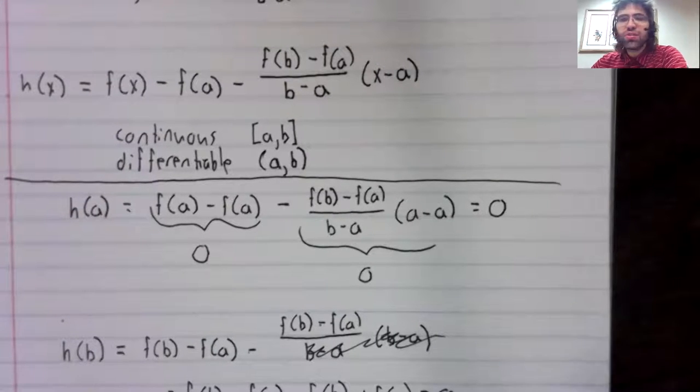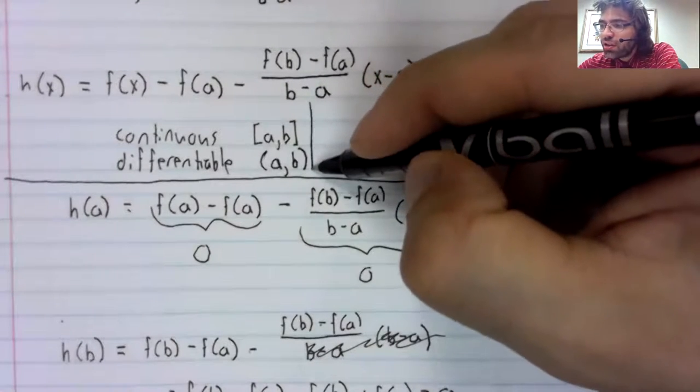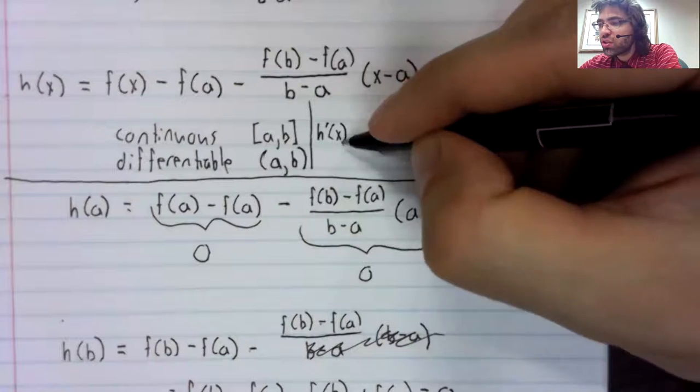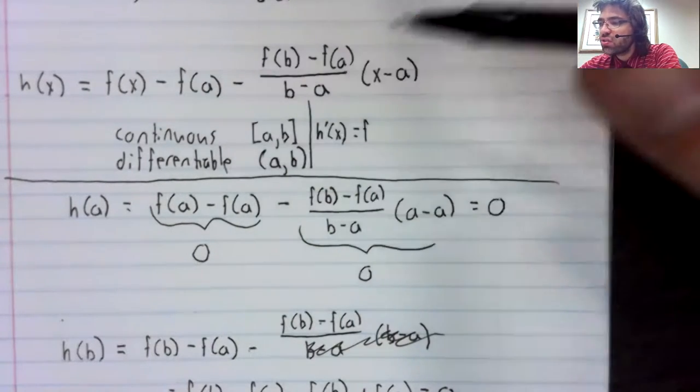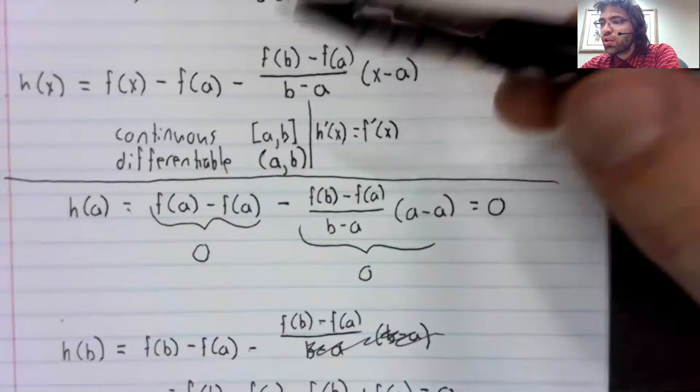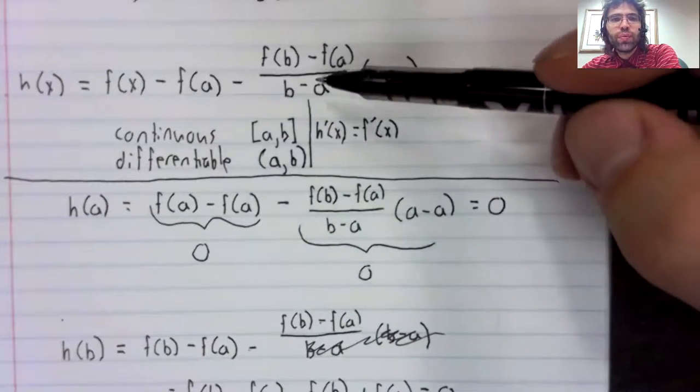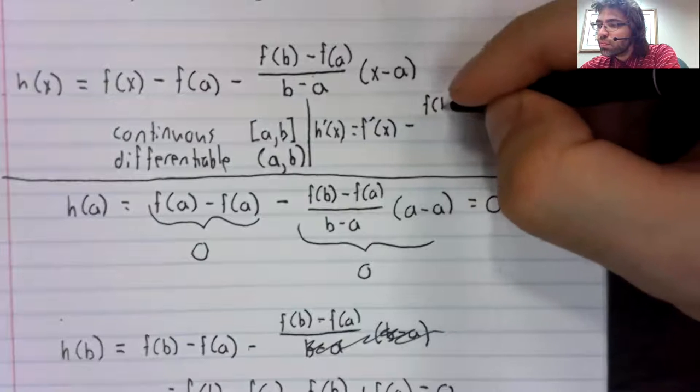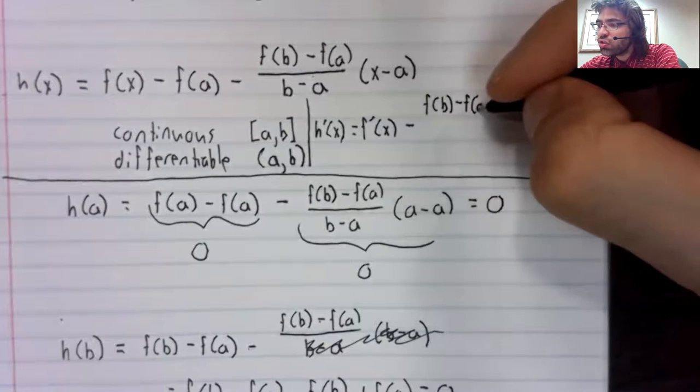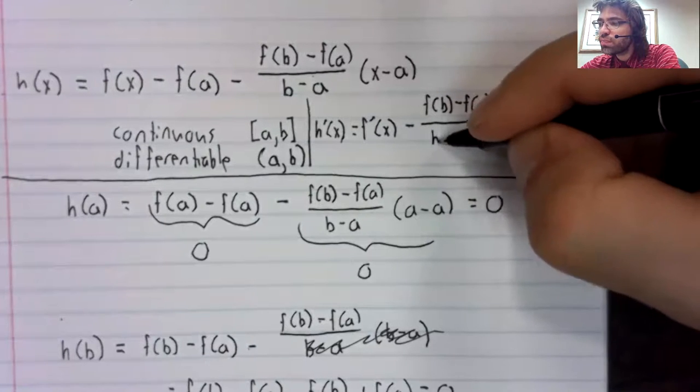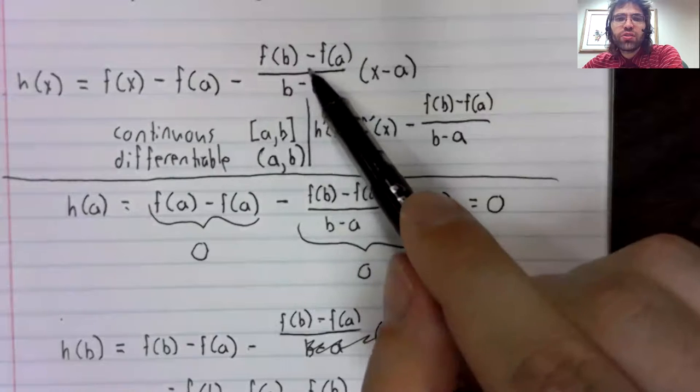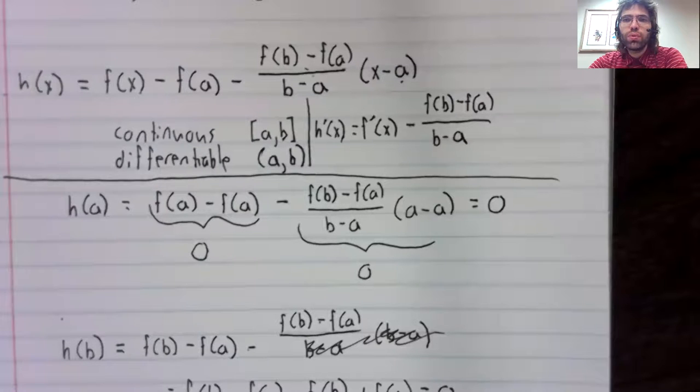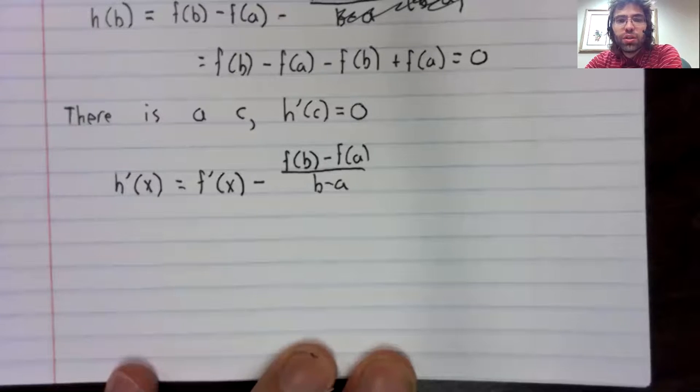Here's h of x. This is going to be a little cramped, but h prime of x. We've got the derivative of this. The derivative of a constant is zero. We've got this constant times x. The derivative of constant times x is just the constant. And we've got this constant times a. The derivative of a constant is zero. So here's the derivative.